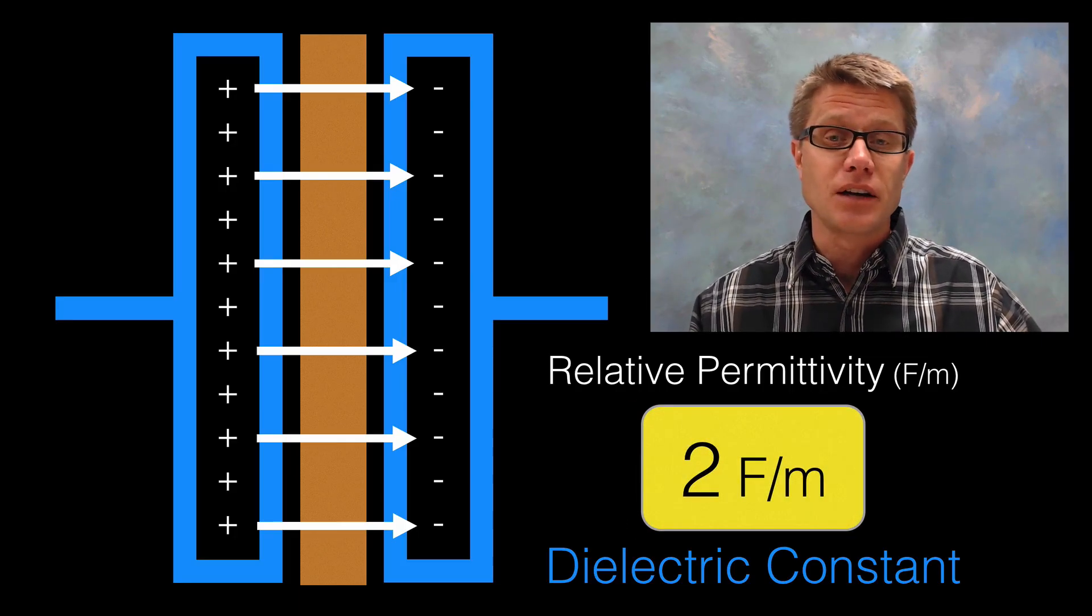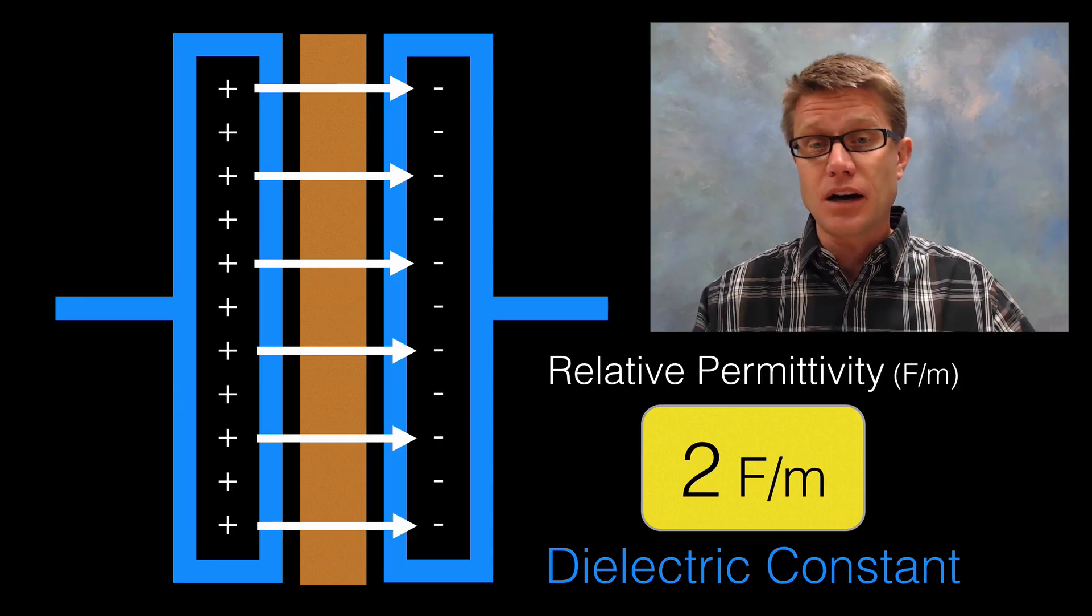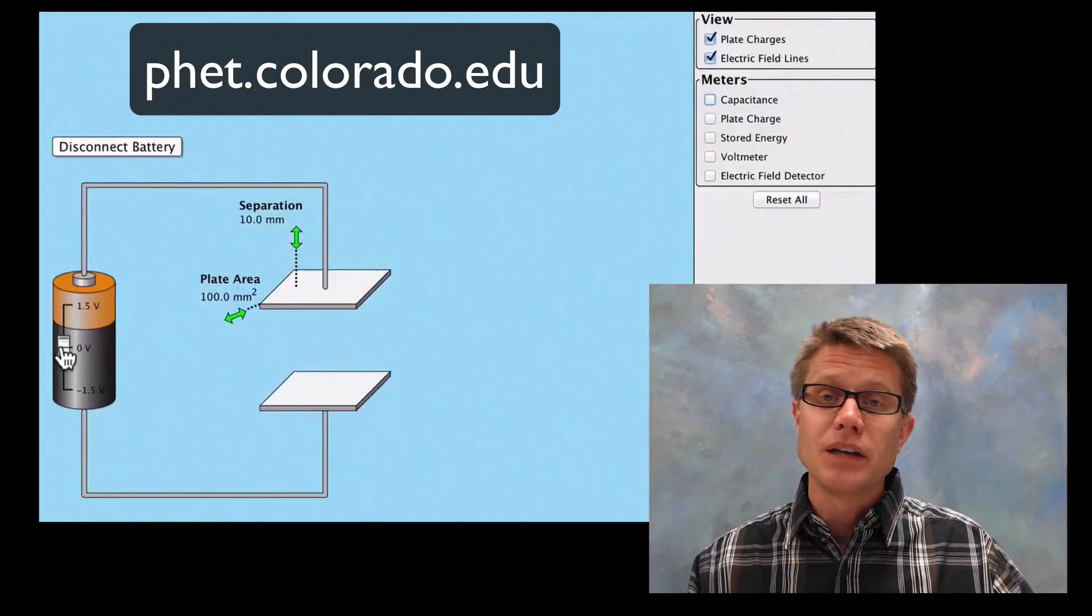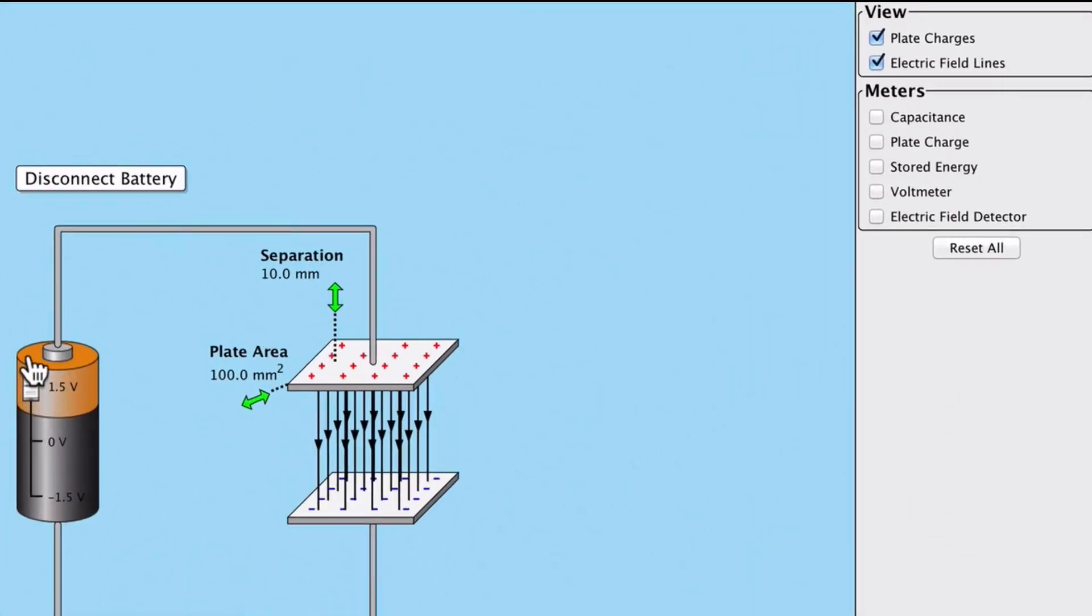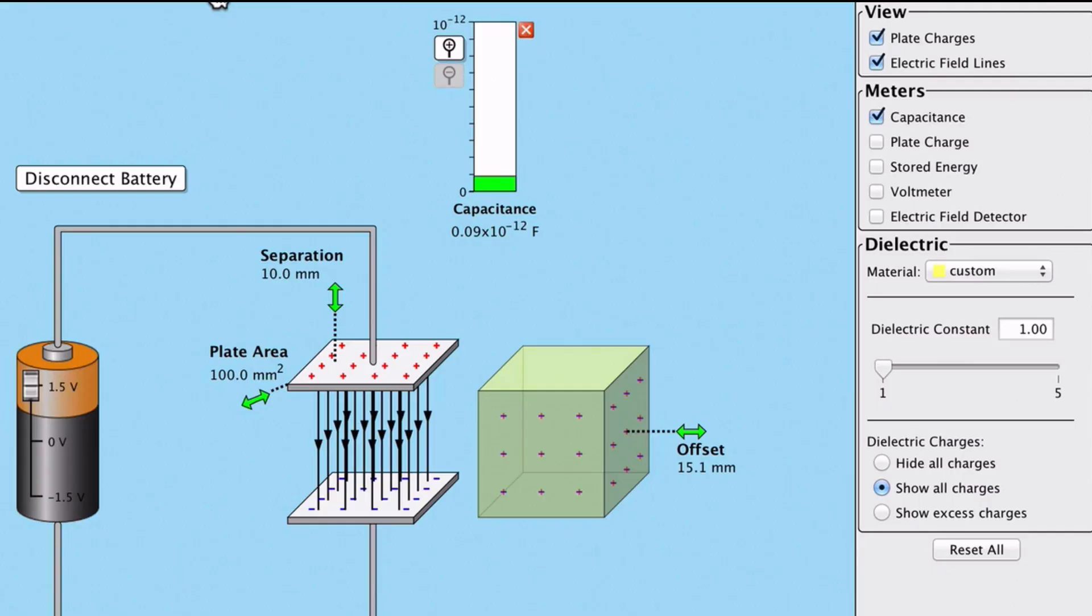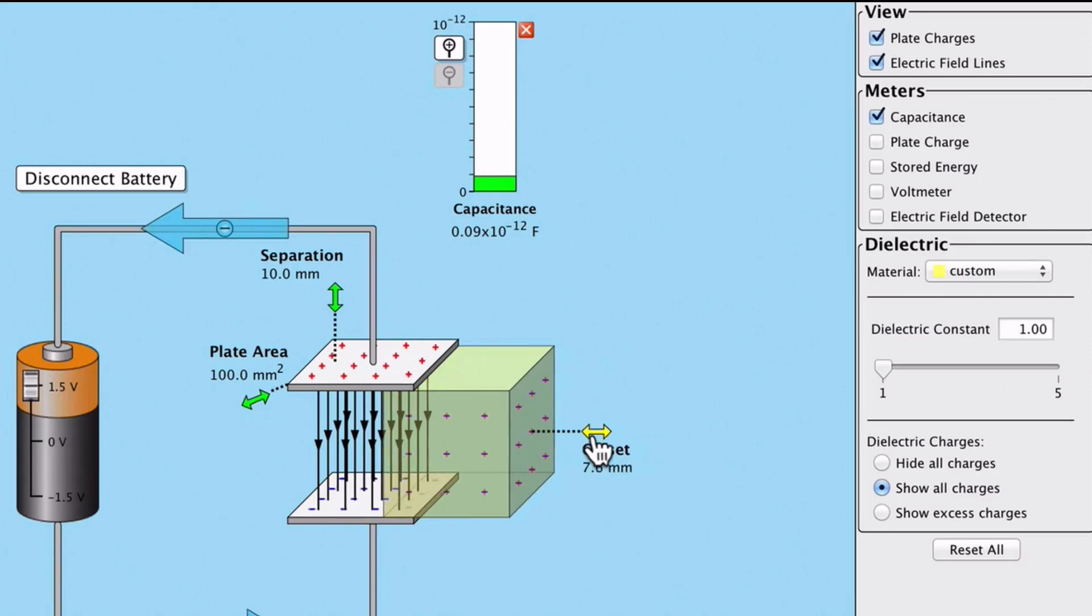We now see that we have a dielectric constant that is going to be higher than our constant which was 1. If we look at this PhET simulation we have a capacitor here in the middle. We are going to add a little bit of voltage to it. You can see that charge is starting to build up on both sides of that plate. Now if we take a dielectric and slide it in the middle, well this dielectric is just free space. You can see that it did not change the capacitance.